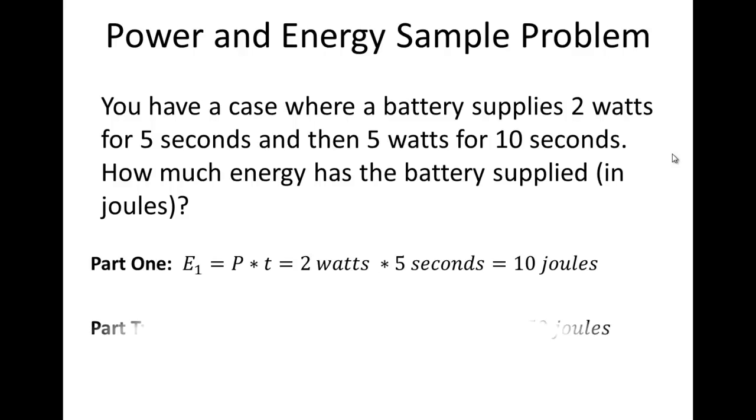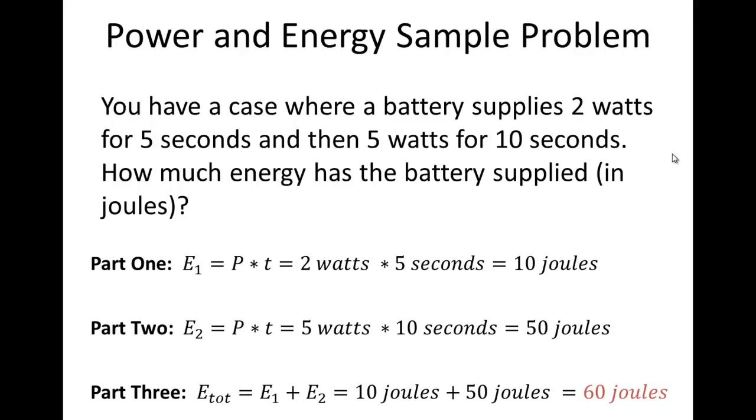Then, the next step is we have five watts for ten seconds. So in the same way, we calculate fifty joules. Now, the trick is to add this up over time. So we want to go ahead and add E1 and E2 to give us a total of sixty joules. Hopefully this gives you an idea of how to calculate power and energy.